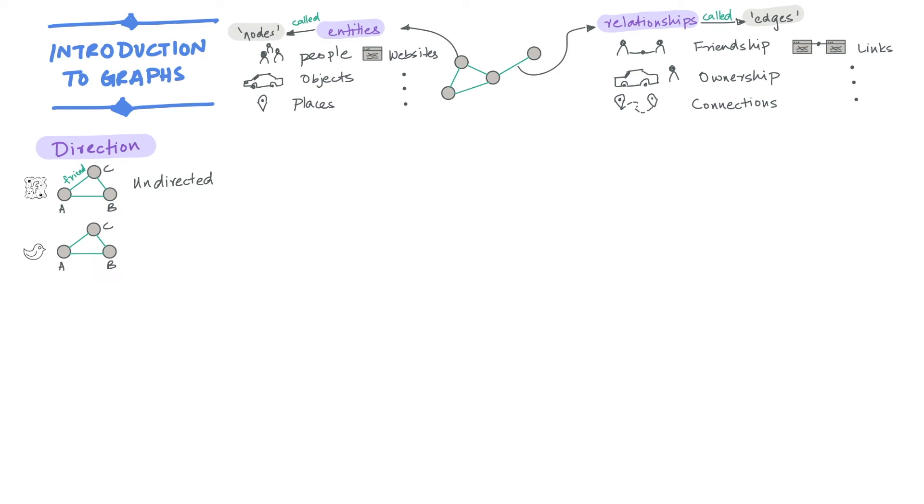We can contrast this with an example from Twitter. On Twitter, you can follow someone without them having to follow you. So you could have a graph as follows, where edges are characterized by a direction that determines who follows whom. For instance, in this case, A follows B, but B does not follow A. This is an example of a directed graph.